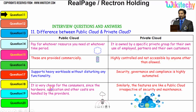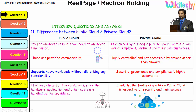The public cloud is very cheap for the consumers since the hardware, application and other costs are handled by the providers. Similarly, the features are like a public cloud irrespective of security and maintenance. This is the major difference between the public cloud and the private cloud.